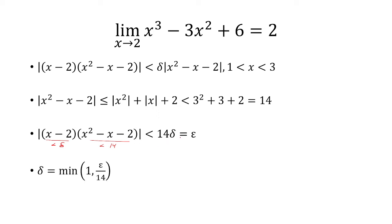The first part was less than delta and the second part is less than 14, so multiplying gives 14 delta, and that equals epsilon. Dividing both sides by 14, delta equals epsilon over 14. But recall we said delta is less than or equal to 1, so we take delta to be the minimum of 1 and epsilon over 14.